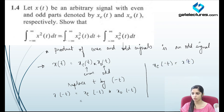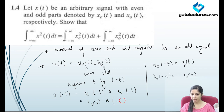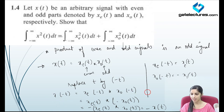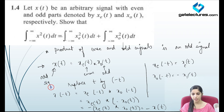Since x_e is an even signal, x_e(minus t) equals x_e(t). And for odd signal, x_o(minus t) equals minus x_o(t). So x(minus t) equals x_e(minus t) times x_o(minus t), which becomes x_e(t) times minus x_o(t), which equals minus x_e(t) times x_o(t), which is minus x(t). Since the signal satisfies x(minus t) equals minus x(t), this means the product of even and odd signal is always going to be an odd signal.